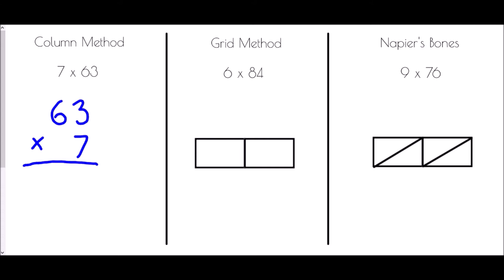We need to take a couple of stages. First, 7 multiplied by 3 is 21. I'm going to write down the units — the 1 — and the 2 is going to be carried over. I write it just on top of the line to keep track. Next, 7 times 6 is 42, and I need to add on the 2 that were left over, so 42 plus 2 is 44. I write all of that down, and so 7 times 63 is 441.